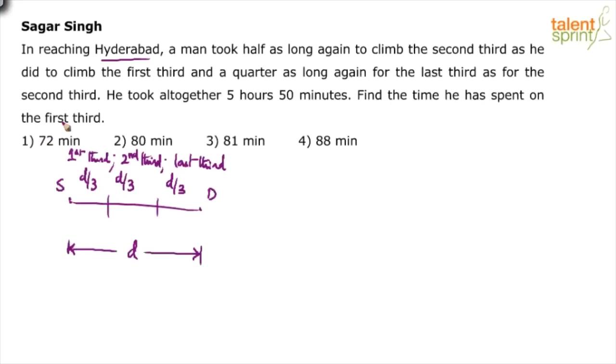Now what is the question? This man took half as long to climb the second third. That means to cover the second third, he has taken half more the time than he did to climb the first third. And a quarter - what do you mean by quarter? One fourth. One fourth more. One fourth as long again for the last third as for the second third. So he has taken one fourth more time for the last third when compared to the second third.